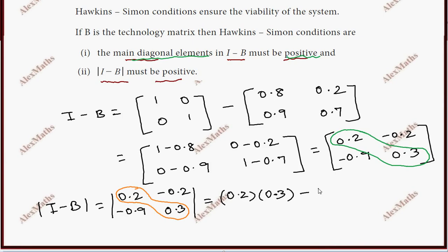minus median element multiply: 0.2 into minus 0.9. It is 0.06. Minus 0.18. Subtract: 0.06 minus 0.18 equals minus 0.12, less than 0. Condition not satisfied.